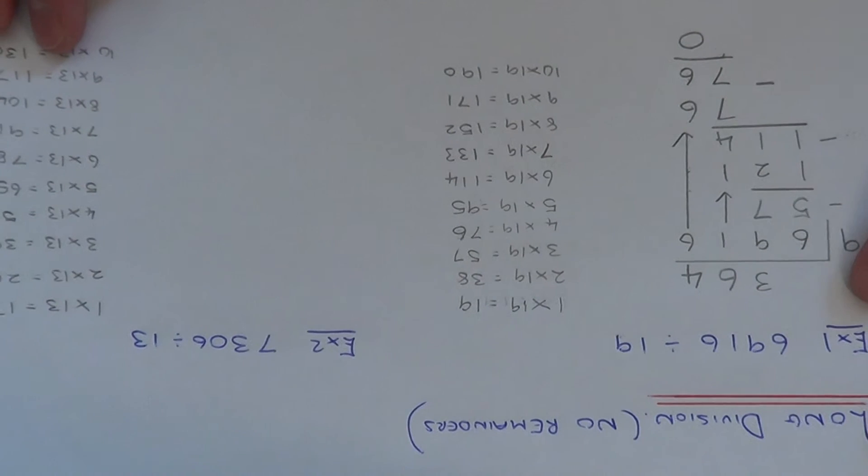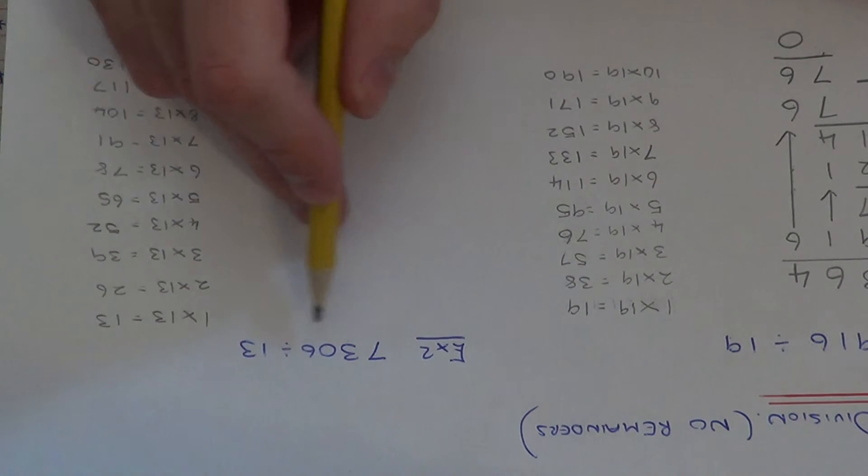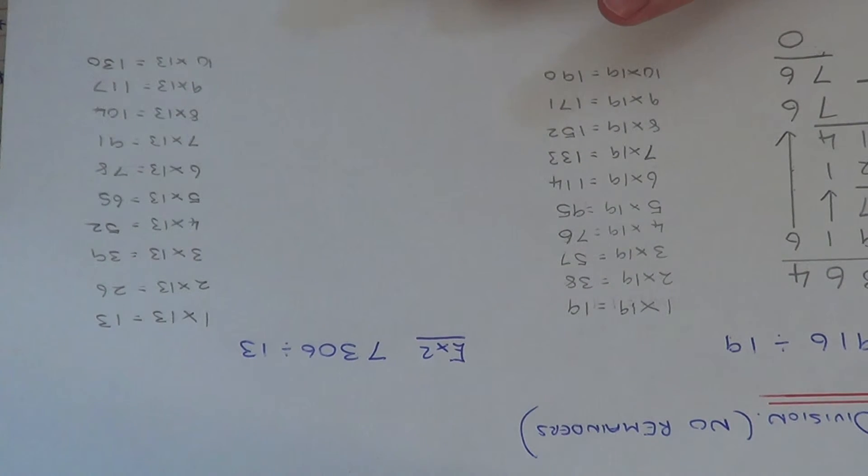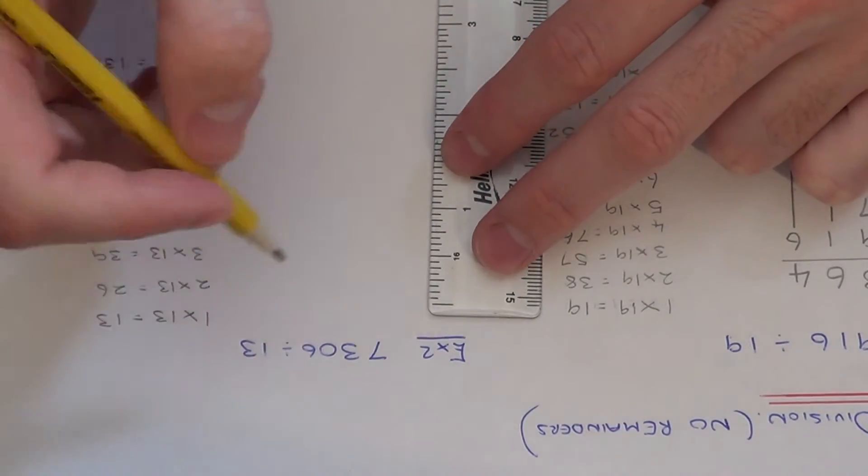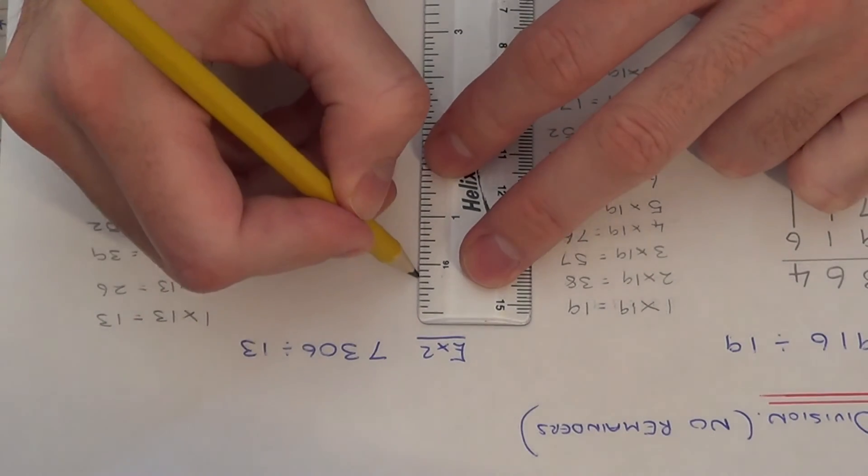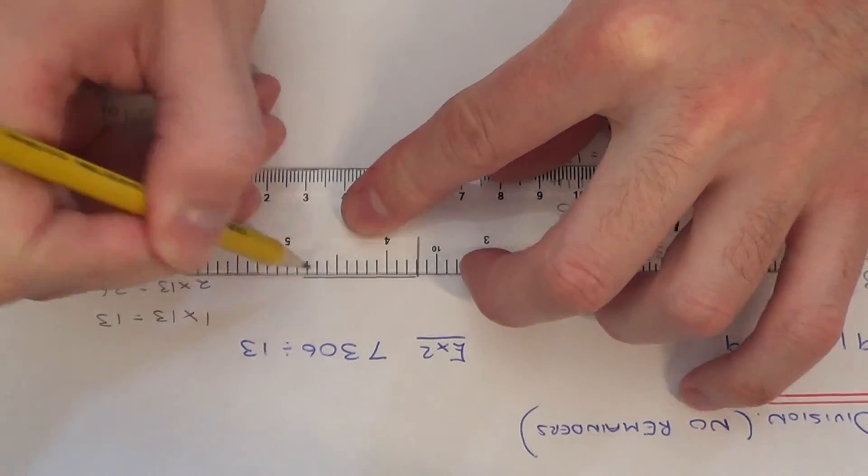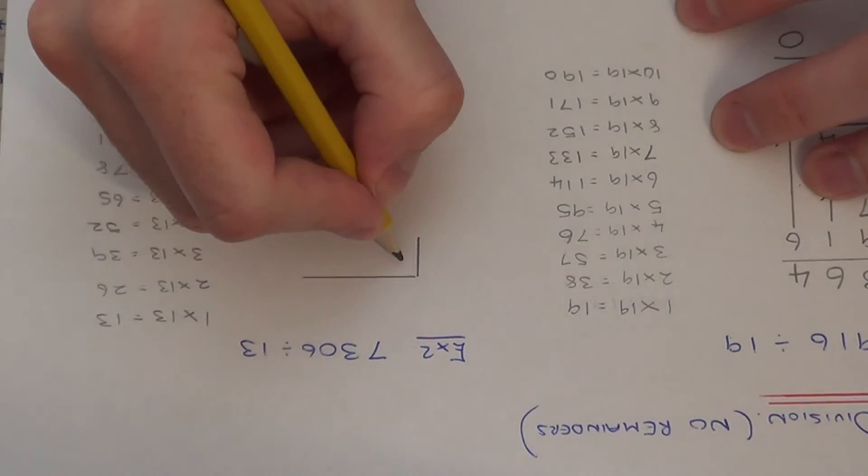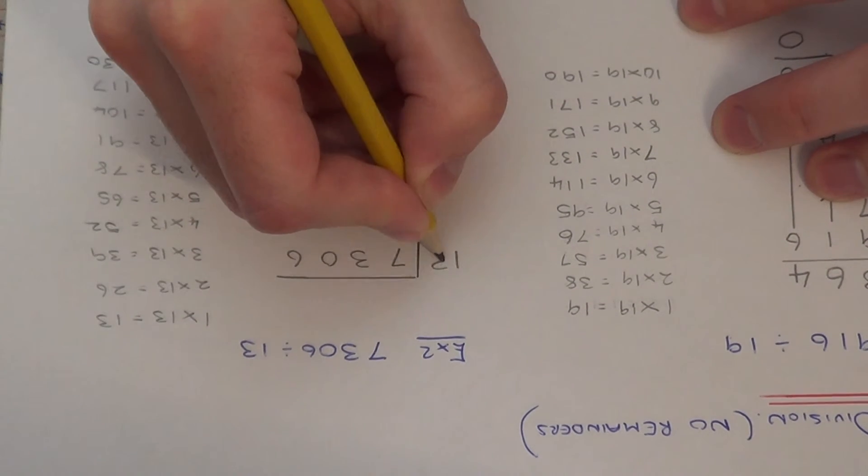So let's do example 2. So this time we've got to do 7,306 divided by 13. So again I've written down my multiples of 13 to save a little bit of time. So I don't have to keep working out my multiples of 13 as I go through. So again set it out in the same way.